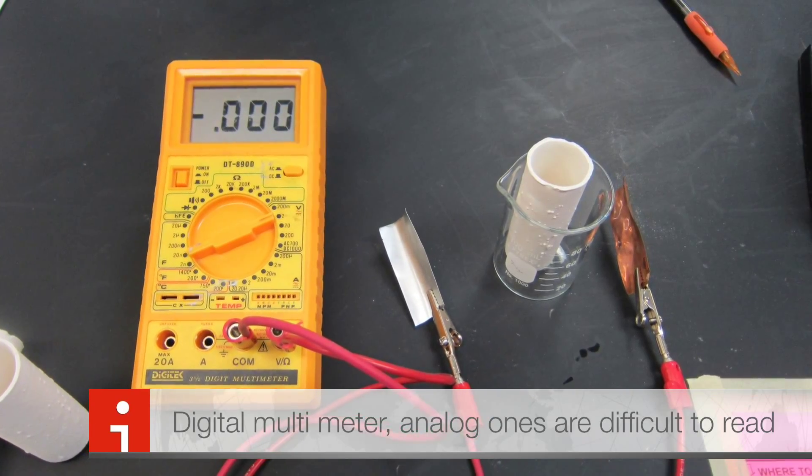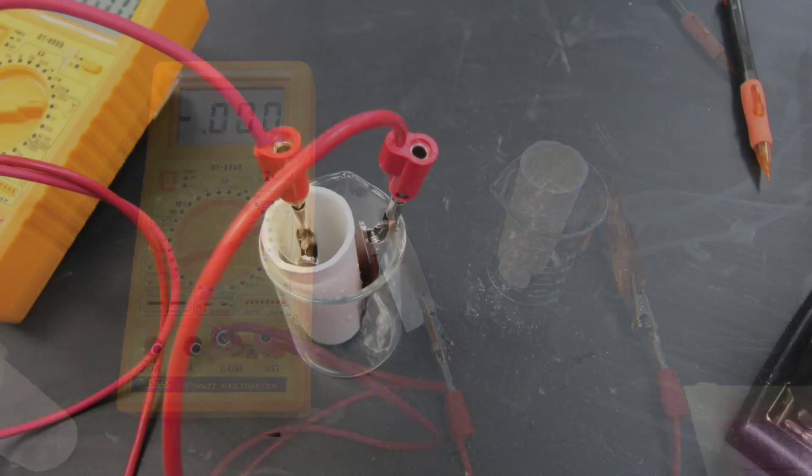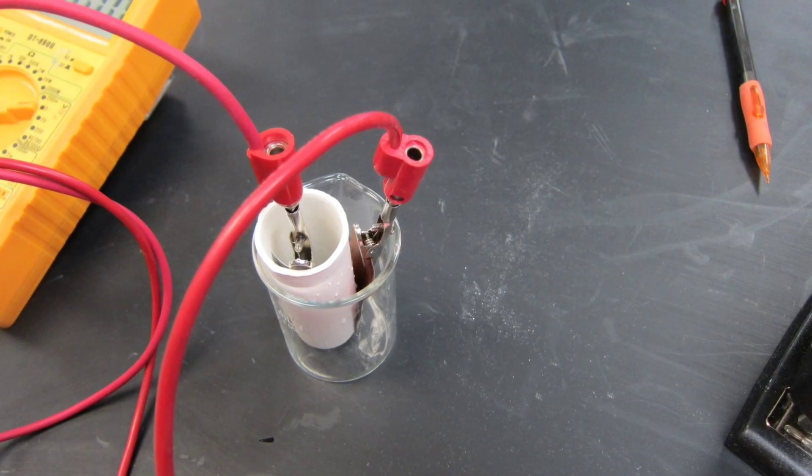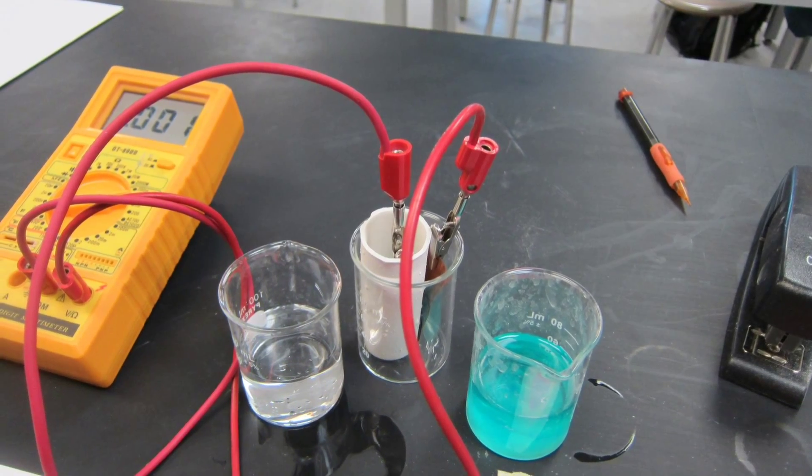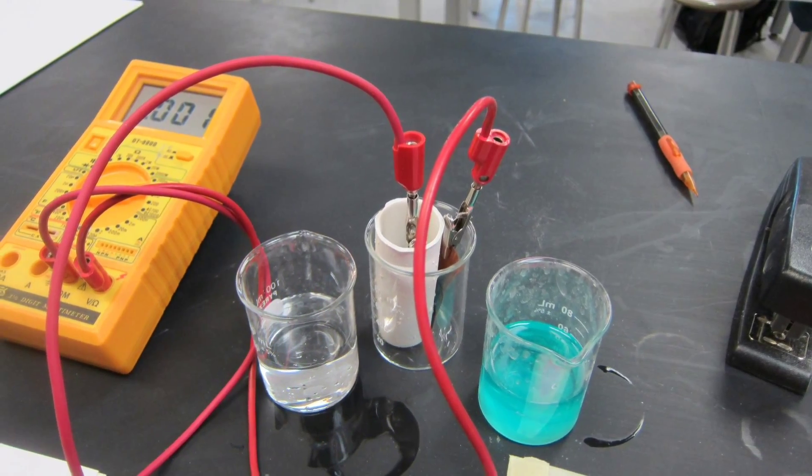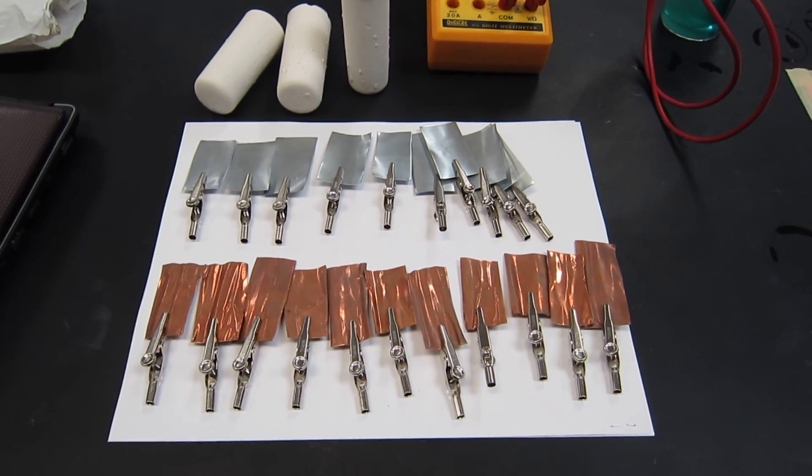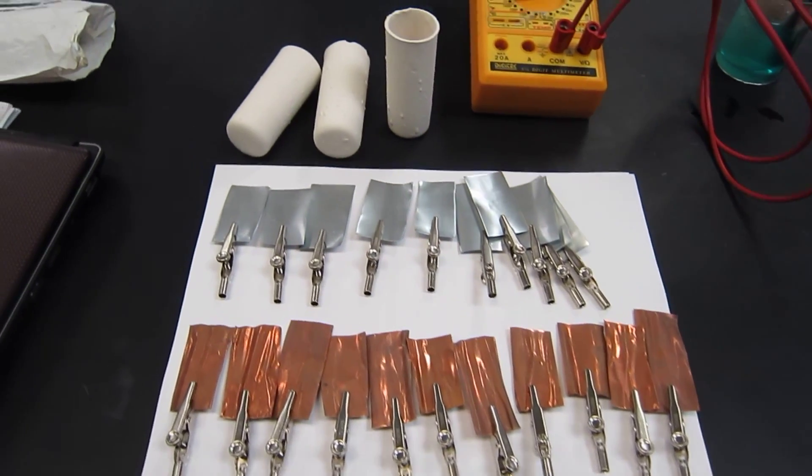In order to measure the EMF of the cell, we will use a digital multimeter. Connect the electrodes to the multimeter. The anode is zinc and the cathode is copper. This is how the setup will look once you have connected all the devices.